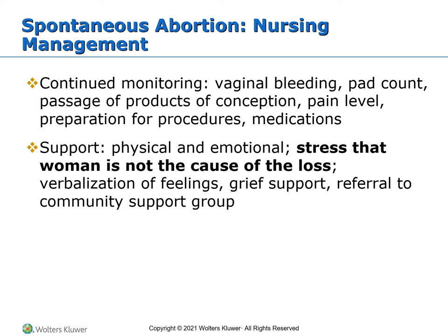Management depends on the type of miscarriage and the signs and symptoms. A threatened abortion is traditionally managed at home, but bed rest doesn't necessarily prevent progression to spontaneous abortion. If all products of conception are passed, there is no surgical intervention needed. If she is having heavy bleeding, excessive cramping, the remaining embryonic, fetal, or placental tissue must be removed usually by suction curettage. If the patient is stable, expectant management is used and most will end in spontaneous abortion. Usually they are discharged home in a couple of hours if vital signs are stable, bleeding is minimal, and she has recovered from anesthesia.